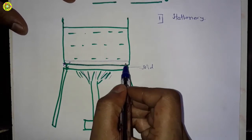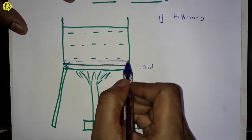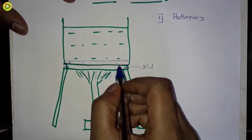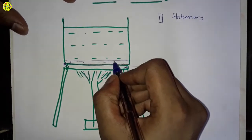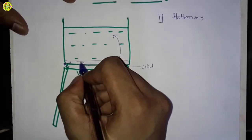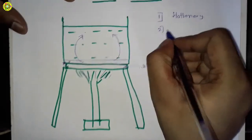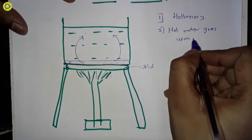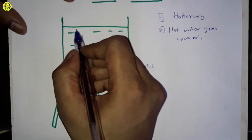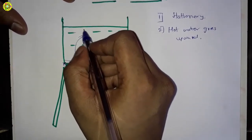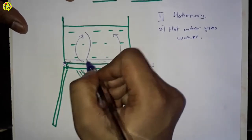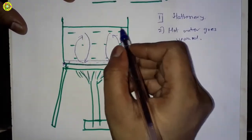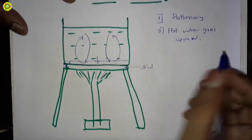This first layer of liquid near the hot bottom surface of the container gets heated and goes upwards. The hot water goes upward, and the cold water from the top goes down to the bottom surface. So the hot layer goes up and the cold water comes down, like this.